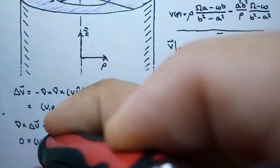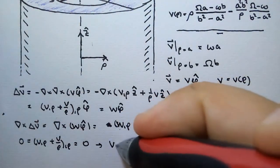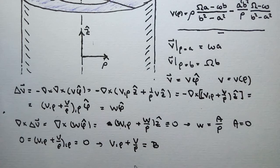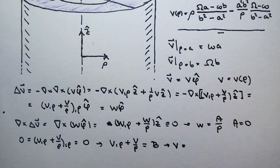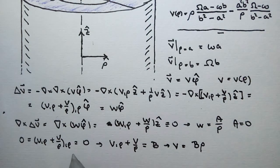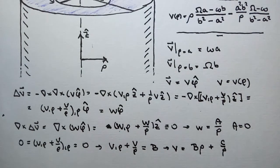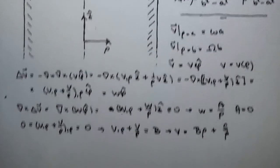Setting the equation to zero: v_ρ + (∂v/∂ρ) = 0. Integrating once gives v·ρ + v/ρ = constant B. This is a homogeneous equation with solutions ρ and 1/ρ, so the general solution is v(ρ) = Bρ + C/ρ. This matches the structure of the Taylor-Couette formula shown at the beginning.